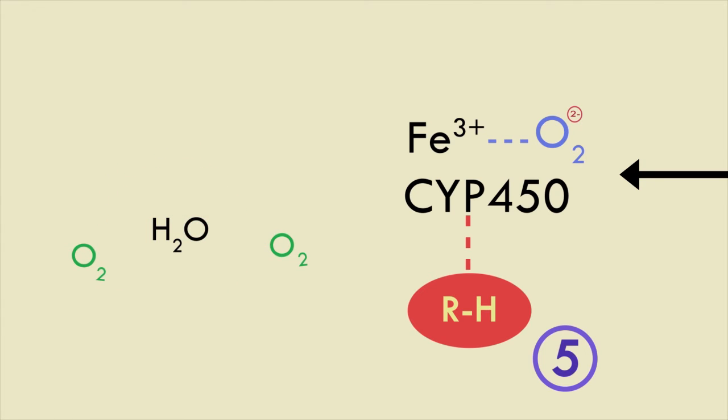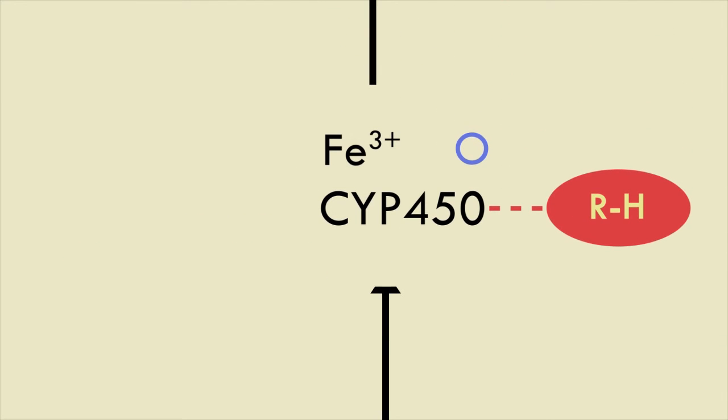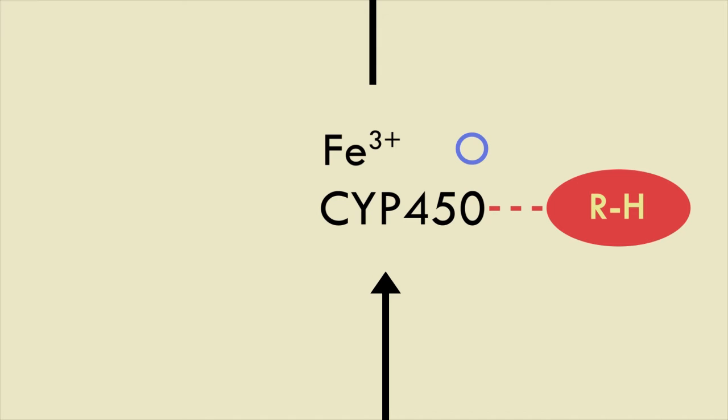Steps 1 to 5 are essentially preparing the substrate for the next step, where the drug actually gets modified. In this step, the remaining oxygen will get transferred over to the substrate. It is both thermodynamically and kinetically favorable for this to occur. Once this transfer occurs,